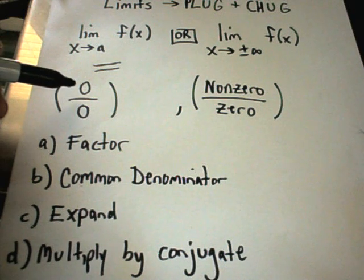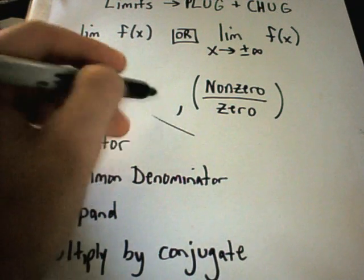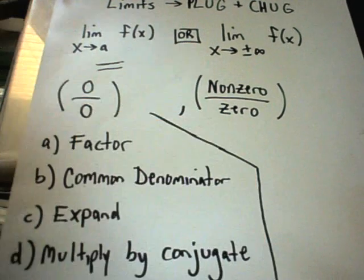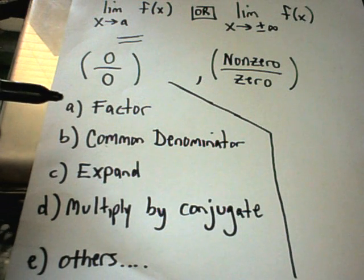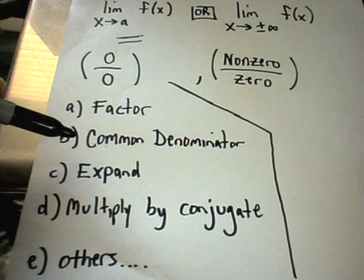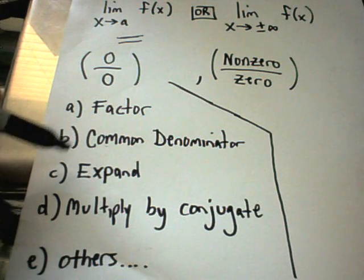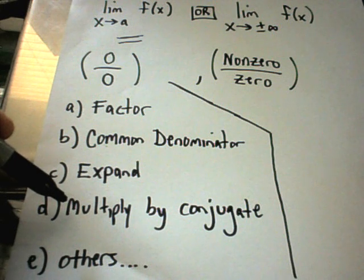So if you have something of the form 0 over 0, typically your solution will end up being a finite number, at least for a lot of the examples that you'll encounter. And there's probably four good common tricks to always use to approach these problems. One is you can try to factor and cancel. If there's a fraction floating around, try to get common denominators and simplify it down. If there's something to multiply out, try to expand it and multiply it out and see if that helps. If there's a radical involved, try multiplying by the conjugate.